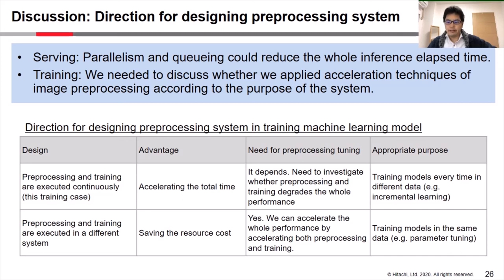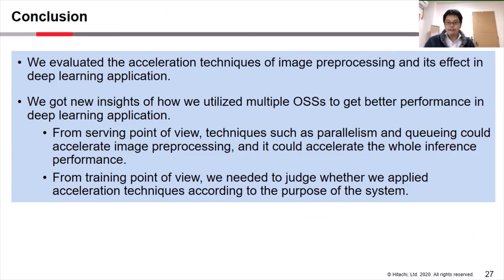In conclusion, we evaluated the acceleration techniques of image preprocessing and its effect in deep learning applications. From this research, we got new insights into how we utilize multiple open source softwares to get better performance. From a serving point of view, techniques such as parallelism and queuing could accelerate image preprocessing and reduce overall inference time. From a training point of view, we need to judge whether to apply acceleration techniques according to the purpose of the system.